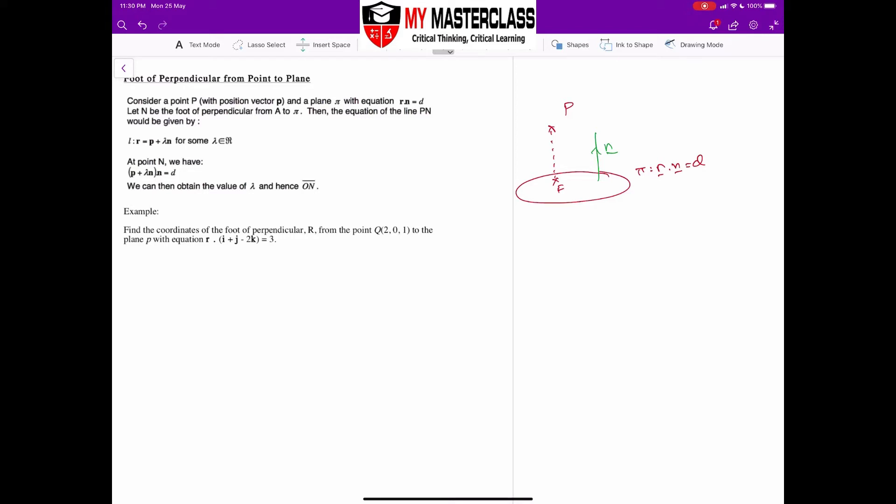So I have to create a line equation PF. Once I create a line equation PF, essentially finding the foot of perpendicular is just finding the intersection between the line PF and the plane. So I create a line PF first.